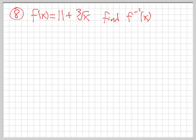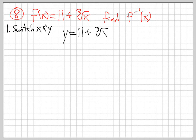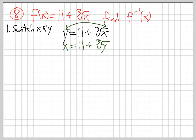Let's try the next one. Step one: switch x and y. This is y equals 11 plus the cube root of x. Switch x and y — they trade roles. So this becomes x equals 11 plus the cube root of y.